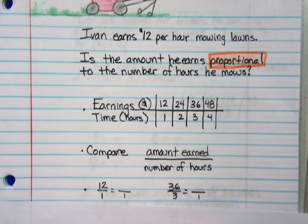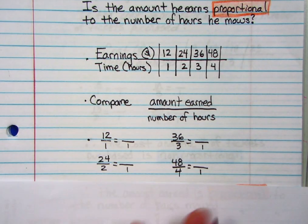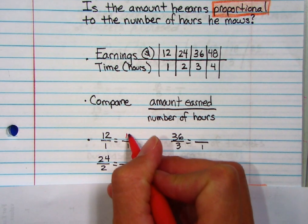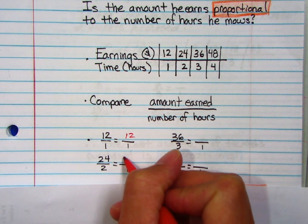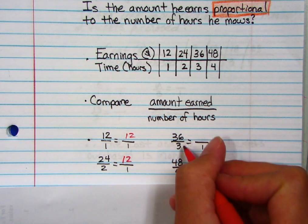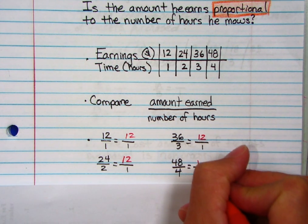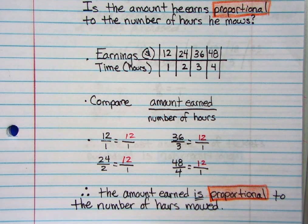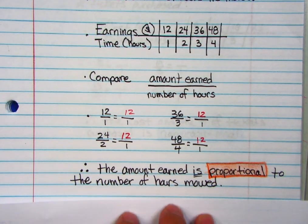So if I compare the amount he earned over the hours and find the unit rates, I can compare this. So twelve over one, well that's just twelve over one. Twenty-four over two, those are both divisible by two, that gives me twelve over one. Thirty-six over three, if I divide them both by three, I get twelve over one. And the last one, also twelve over one. So therefore, the amount he earned is proportional to the number of hours. It's proportional.